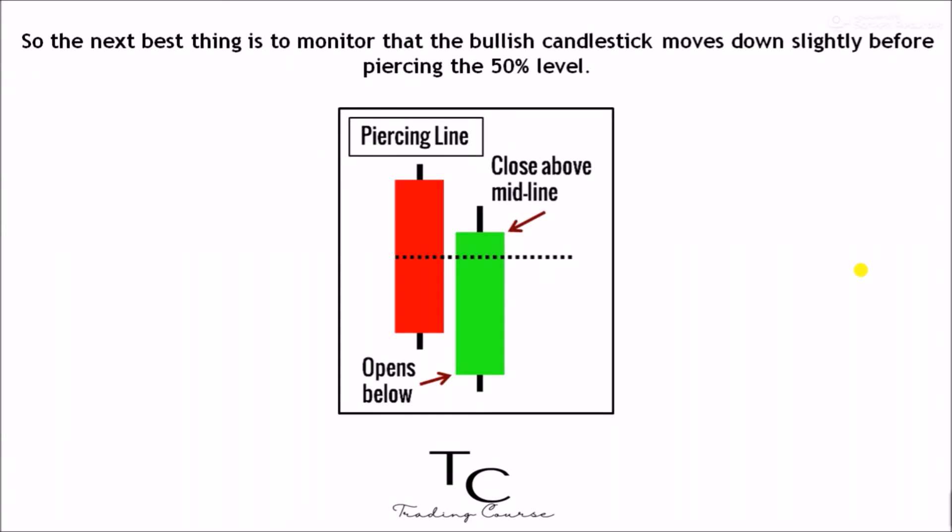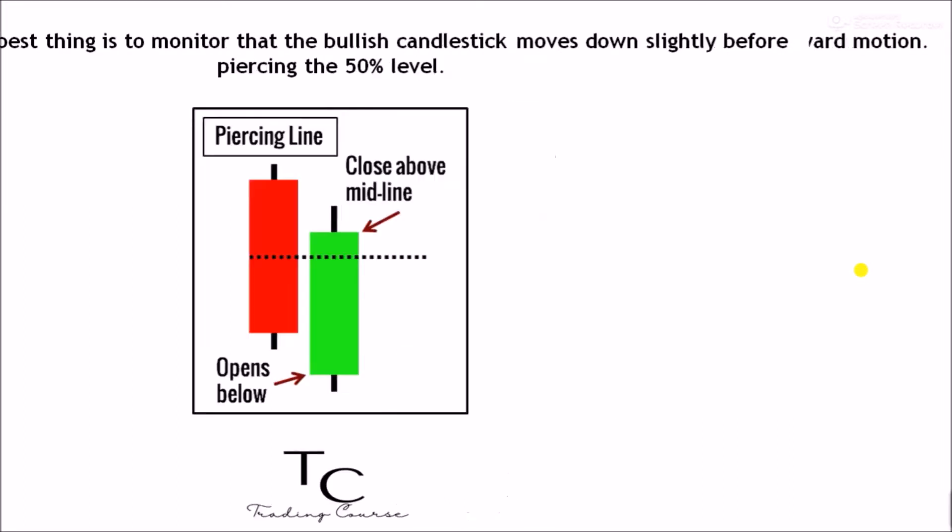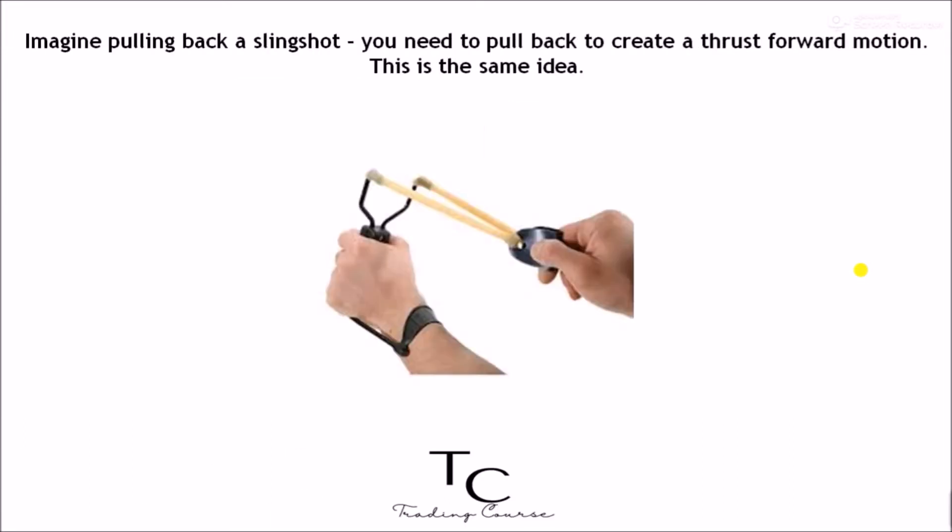So the next best thing is to monitor that the bullish candlestick moves down slightly before piercing the 50% level. Imagine pulling back a slingshot — you need to pull back to create a thrust forward motion.